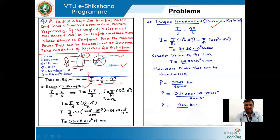The torsion equation is given by T/J = τ/r = Gθ/L, where T is the torque transmitted by the shaft, J is the polar moment of inertia, τ is the shear stress, r is the radius, G is the modulus of rigidity, θ is the angle of twist, and L is the length of the shaft.